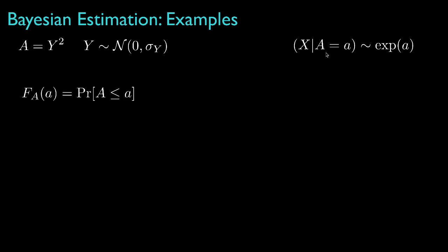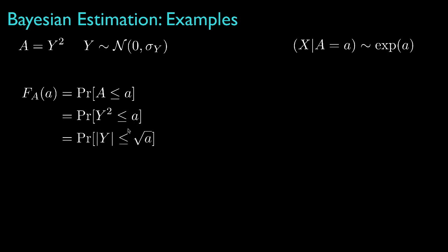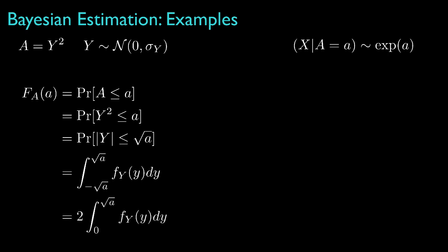To apply Bayesian estimation methods, we'll need to specify the prior for parameter a. We begin by specifying the cumulative distribution function, which is the probability that a takes a value less than or equal to some number lowercase a. Because a is the square of a Gaussian random variable y, the probability that a is less than lowercase a equals the probability that y squared is less than that value, which equals the probability that the absolute value of y is less than or equal to the square root of a — the integral of the density for y from negative to positive square root of a. Because the density for y is symmetric about zero, this is twice the integral from 0 to the square root of a.